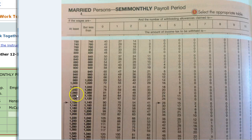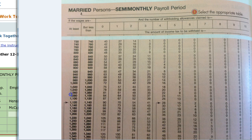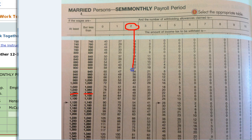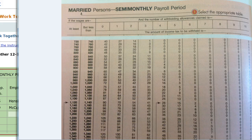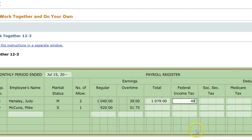We try to locate $1,079 and see what it's in between — at least this number but less than this number. Going down, we find that it's at least $1,060 but less than $1,080. We know she has two allowances, so we go down that column and stay in this row. Where they come together, she has $48 taken out of her paycheck for federal income tax.